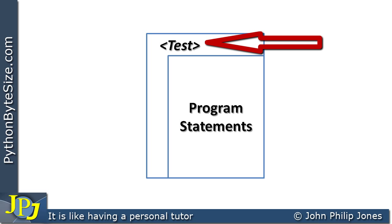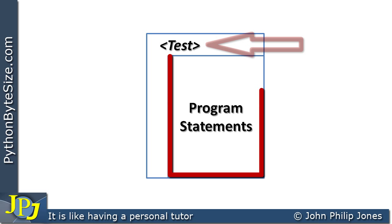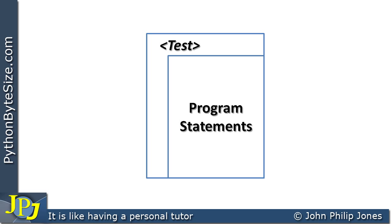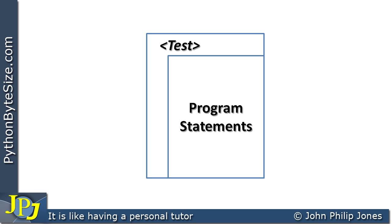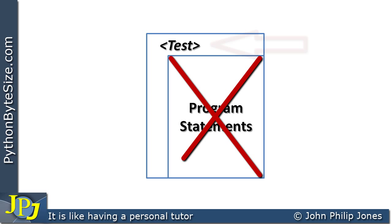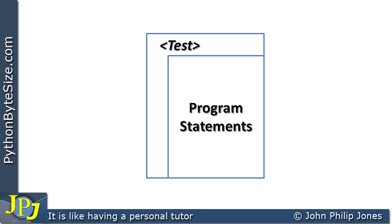In the NS chart, if the test is true we execute the program statements, then go back to the test again — potentially a thousand times. However, if the test is false we do not execute those program statements and carry on with the rest of the program. It's therefore possible that on the very first test it's false and we never execute those statements. The NS chart is a very useful way to show algorithms in a non-coding way, and once shown, they can be converted to Python or any other language.